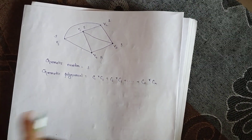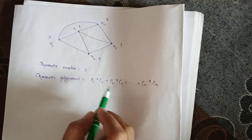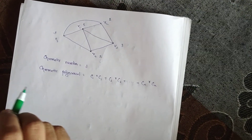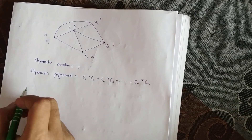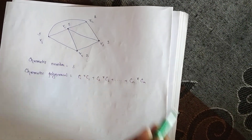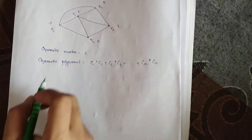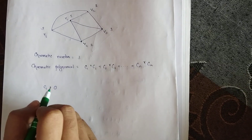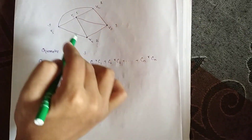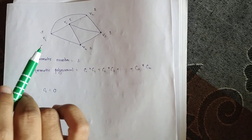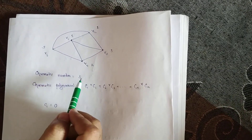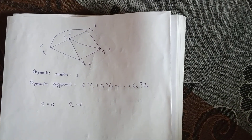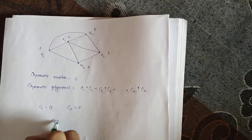The general equation of the chromatic polynomial is given here. We have to calculate the coefficients c1 through c5. c1 is zero because with only one color it is not possible to color the graph — the minimum is 3. c2 is also zero for the same reason. Now we have to calculate c3.